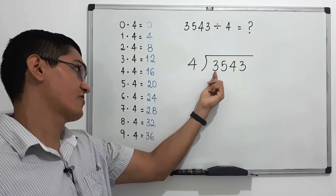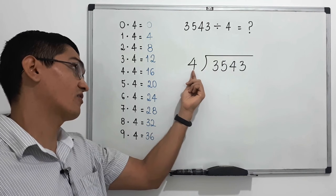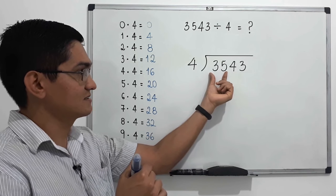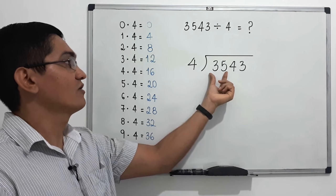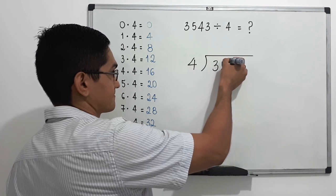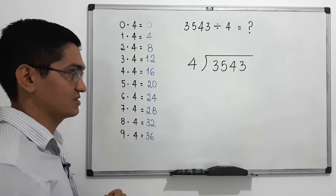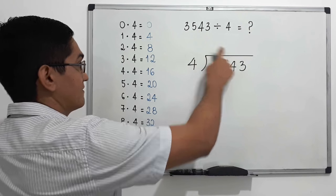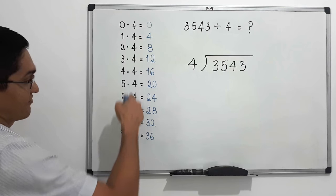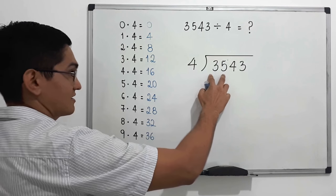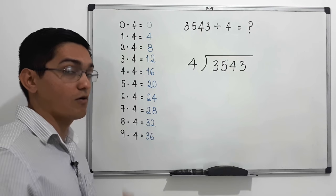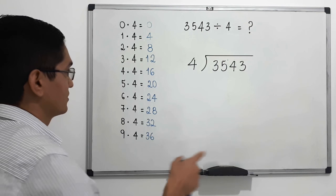We start by looking at the first digit — it's a three. Since three is smaller than four, we do not start there. We join it and group it with the next digit, so we get 35. We start with 35.